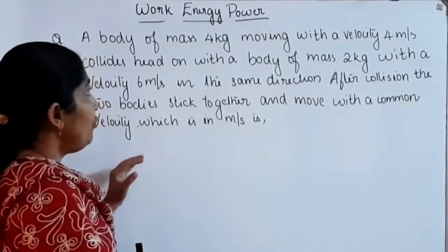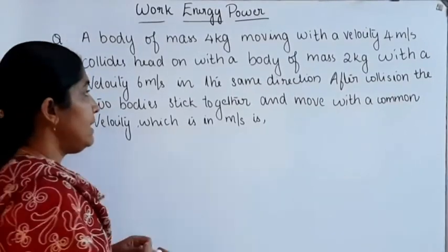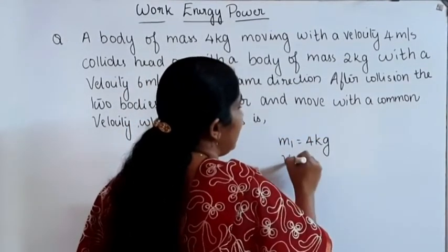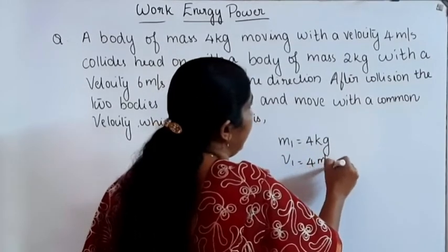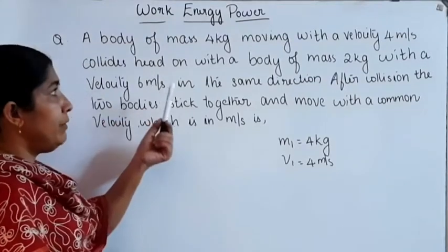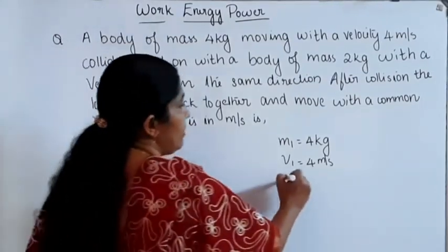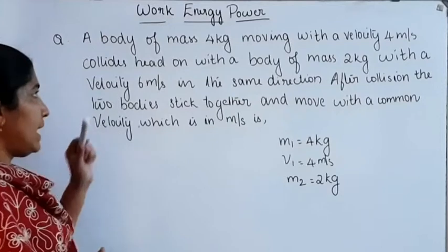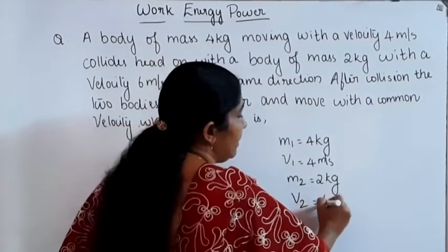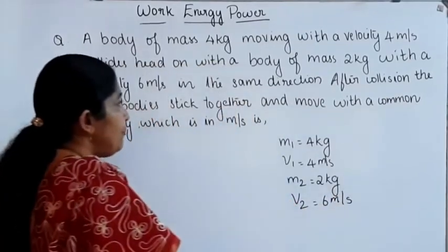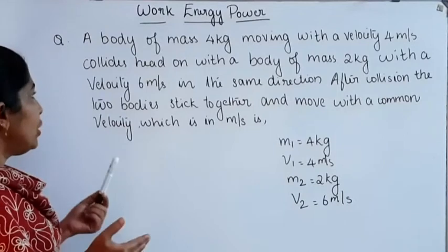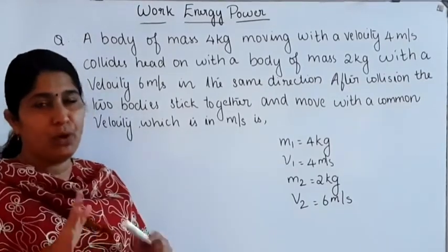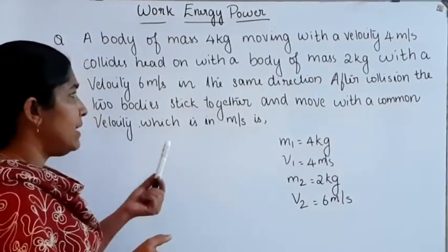Next question: a 4 kg body moving at 4 m/s collides with another body of mass 2 kg moving at 6 m/s in the same direction. After collision they stick together and move with a common velocity. We want to find that common velocity using conservation of momentum.